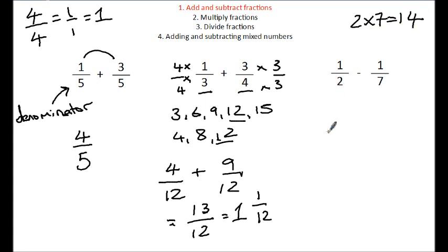To get this 2 to 14, I need to multiply by 7. To get this 7 to 14, I need to multiply by 2. And that's the top and bottom of the fraction like before. Now we can just do 7 take away 2, which is 5 over 14.